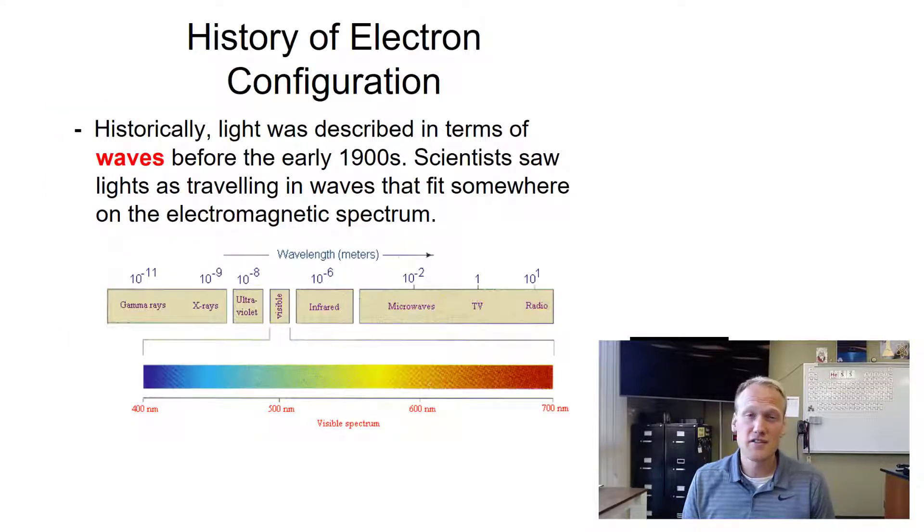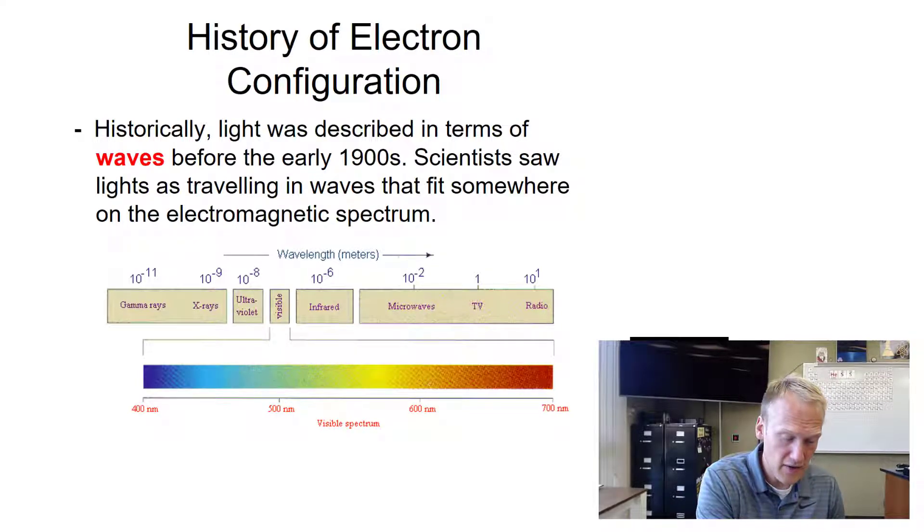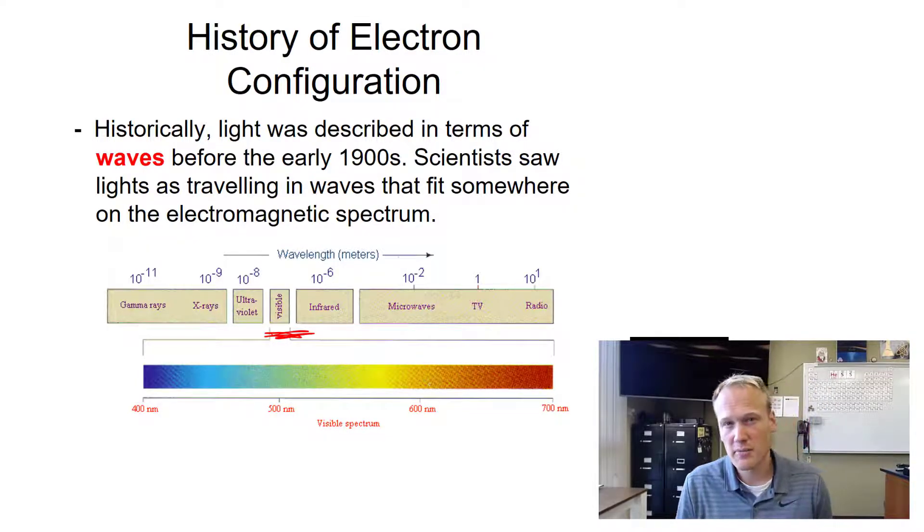Historically, before the 1900s, scientists thought about light as waves. It wasn't matter and it traveled in different frequencies and wavelengths. This is how we see the electromagnetic spectrum, from gamma rays down to radio waves and microwaves. Visible light, located here on the electromagnetic spectrum, has red all the way to violet. That's how we get ROYGBIV.